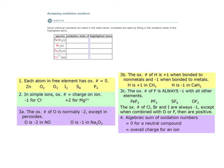How do we assign oxidation numbers to atoms in compounds? Here are some easy guidelines. Rule one: each atom in a free element has an oxidation number of zero. We're assigning an oxidation number to sulfur, but it's not a free element — it's in a compound — so rule one won't apply. However, rule two will. This is an ionic compound made up of iron two-plus ions.